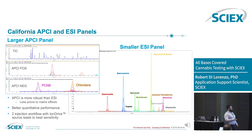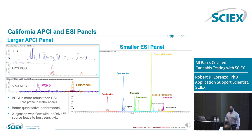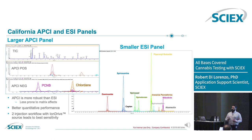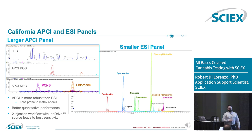Things like pentachloronitrobenzene — an aromatic ring with five chlorines and a nitro group — you can't pull a proton or put on a proton when there are no protons to handle. Same with heavily chlorinated pesticides. We can leverage the power and selectivity of negative mode APCI to ionize these compounds, get really low background, and still detect them at the required levels.